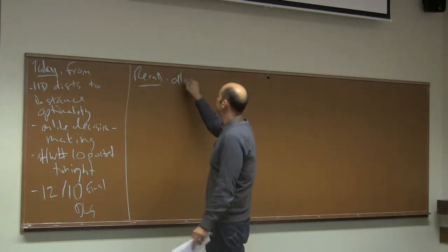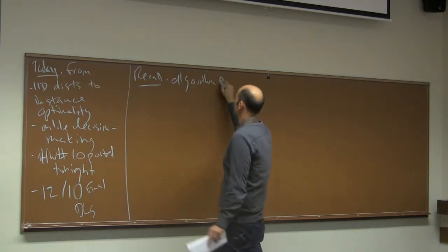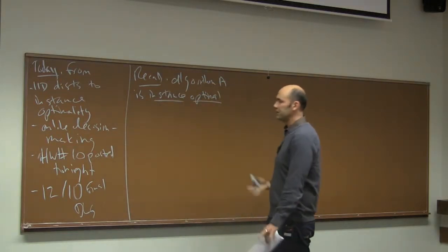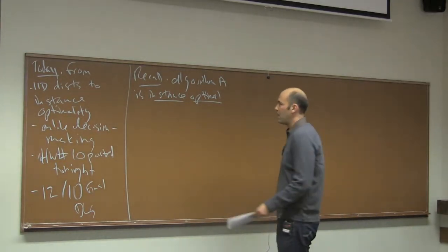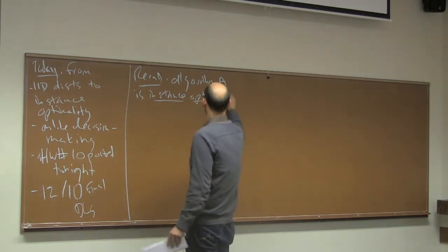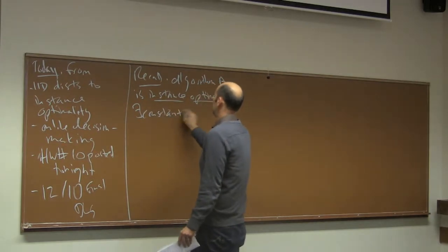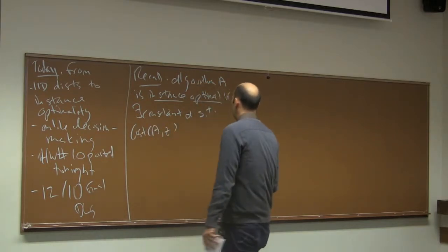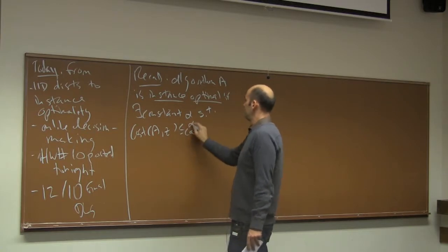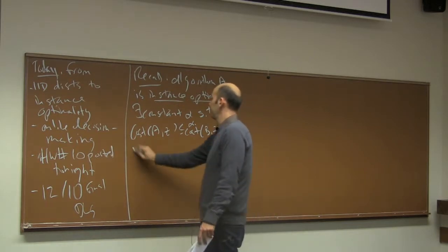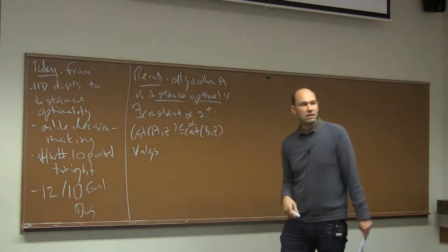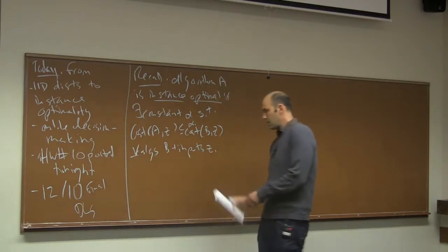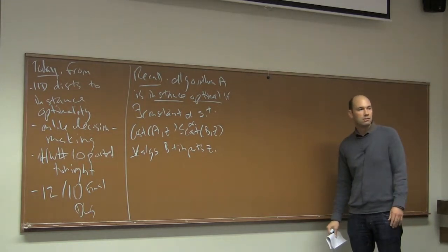Let me remind you about instance optimality. This means you're basically optimal, at least up to a constant factor, input by input. It's the strongest possible, least controversial notion of optimality. Whatever your cost measure, algorithm A is alpha-instance optimal if for every algorithm B and every input Z, you're within an alpha factor of the cost of B on Z. Provided alpha is reasonably small, this is a super strong guarantee — really the best you could hope for.